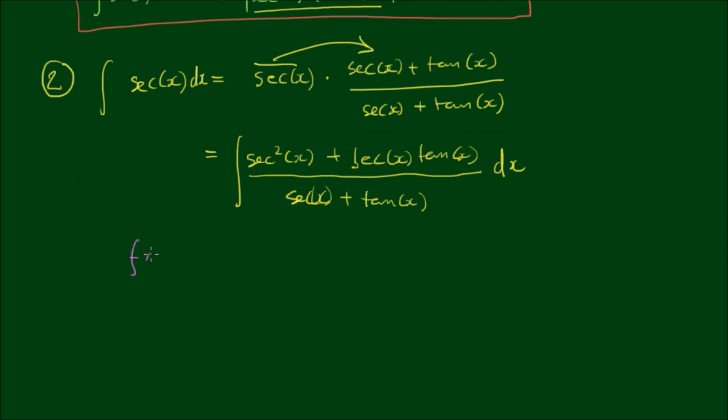So now note on the bottom if we call the denominator f of x, we can say that f of x is equal to sec x plus tan x. So the function f of x is equal to sec x plus tan x. Well if we take the first derivative of f, which is f prime of x, sec x derives to sec x tan x, and tan x differentiates to sec squared x. So you can see that this is equivalent to this, which is written the other way around.